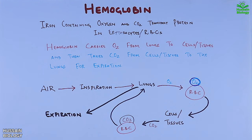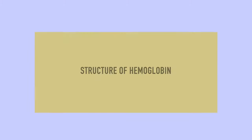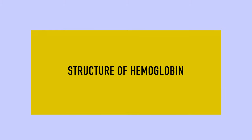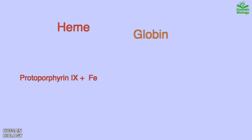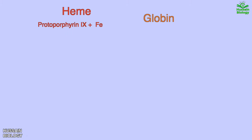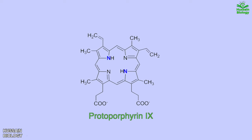Looking at the structure of the hemoglobin molecule, it is a complex protein structure made up of several molecules. It has two major structural elements: heme and globin. The heme is made up of protoporphyrin 9 and an iron atom. As shown in the diagram, when protoporphyrin 9 is combined with an iron atom, we get the heme molecule.